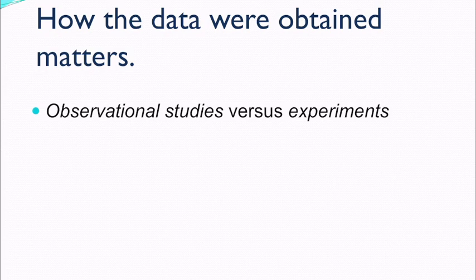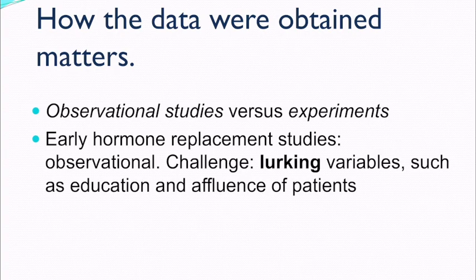It's also important to note that how data were obtained matters. We're going to go over different sampling methods in the future, but there's two different types of studies that can be conducted: observational studies and experimental studies. Observational studies are when we are just looking at a group. We aren't giving them a treatment. In early hormone replacement studies, we were just observing, we weren't giving them any medication.